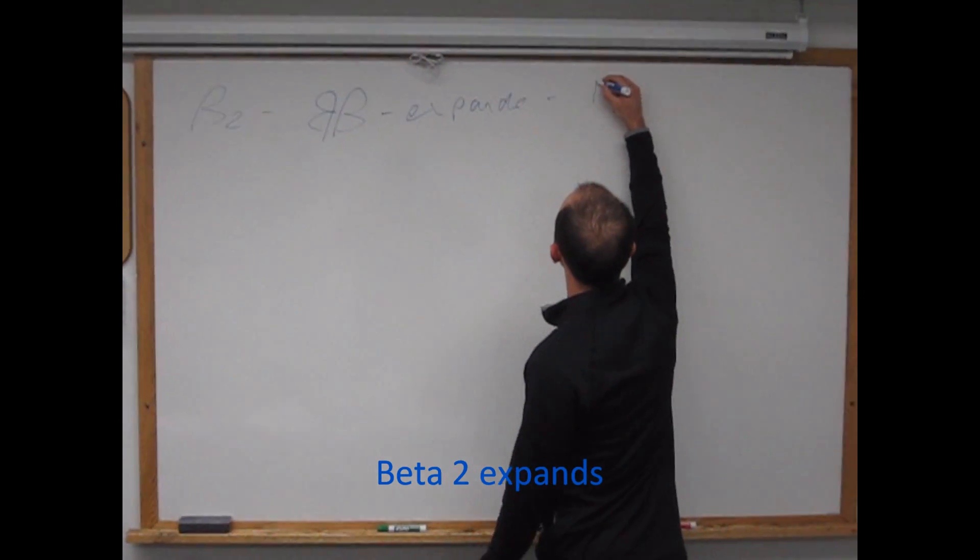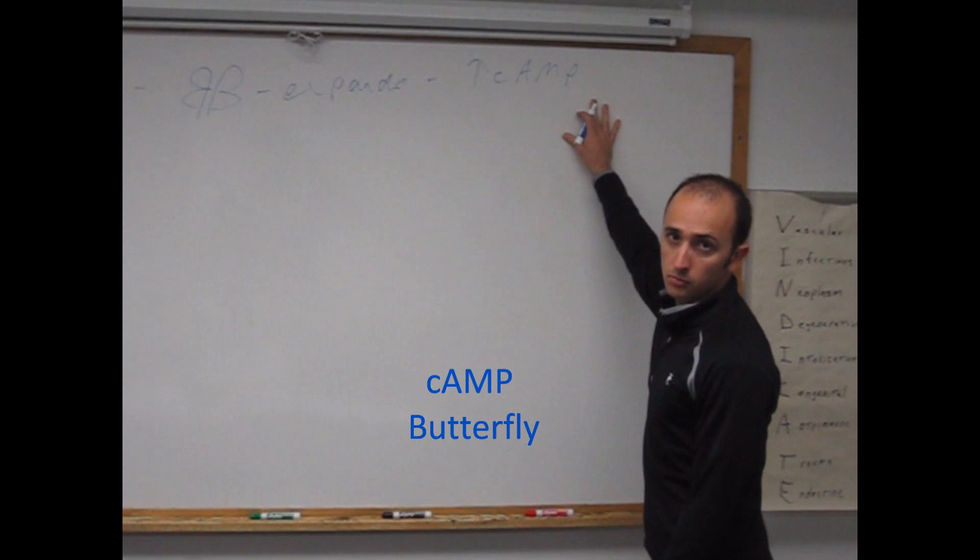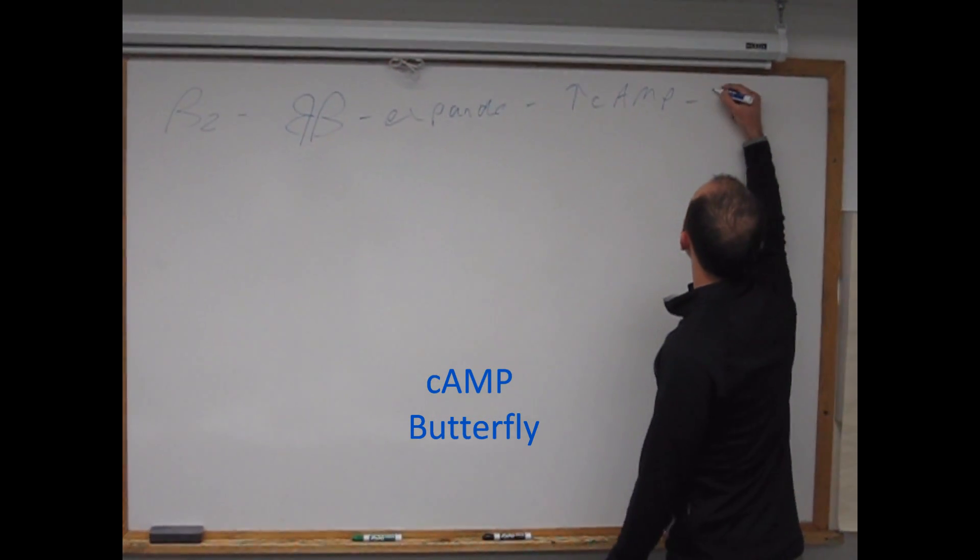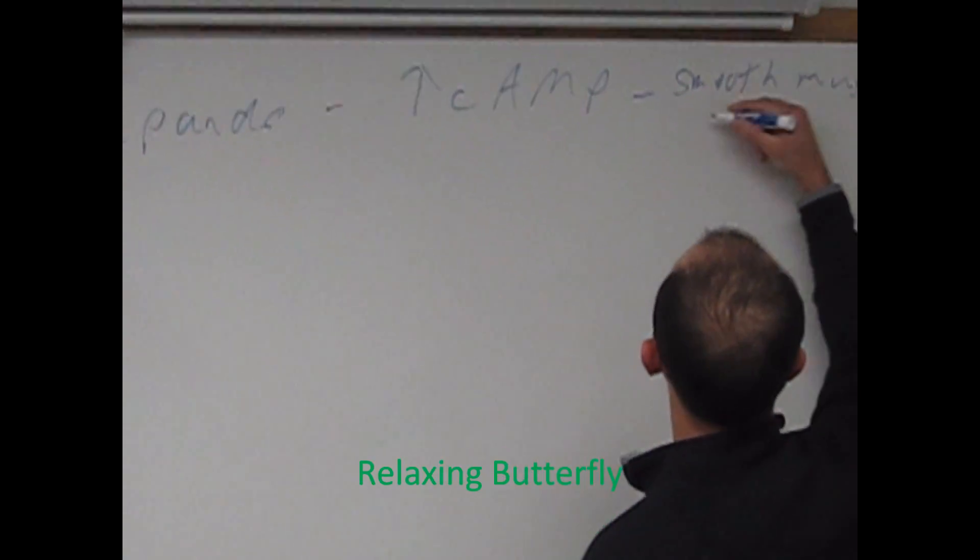So what's beta 2 do? Really it's expanding cyclic AMP, increasing. That's really going to relax smooth muscle in a lot of places. Smooth muscle relaxation.